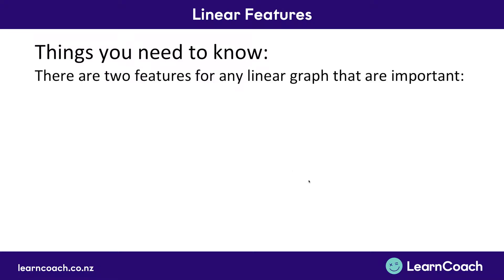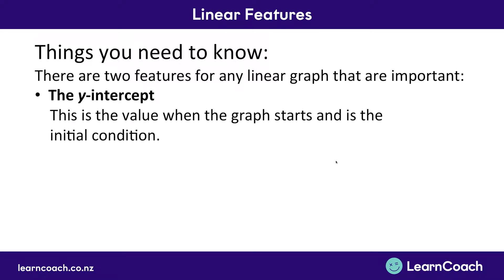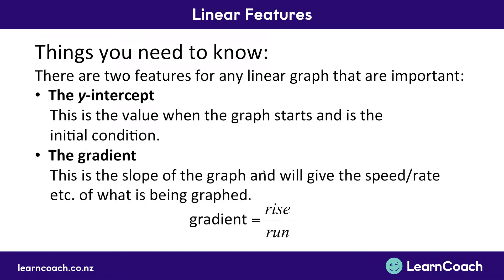There are two key features for any linear graph. The first is the y-intercept — where the graph starts, where it crosses the y-axis. This is the initial condition in a word context, such as an initial pricing or starting value. The second is the gradient — the slope of the graph. If you're asked to find a rate, a speed, or how much something costs per day, that's the gradient, calculated using rise divided by run. In every word question involving a graph, make sure you address both the y-intercept and the gradient.